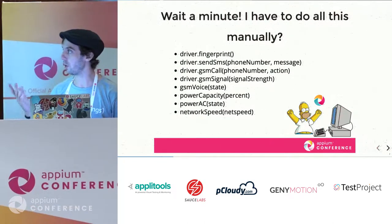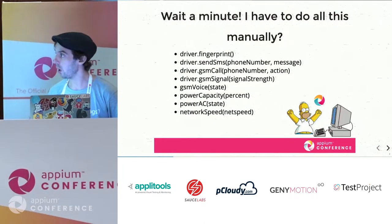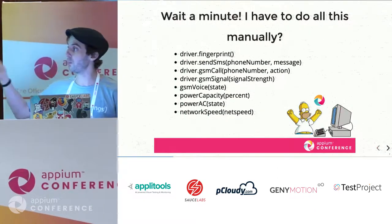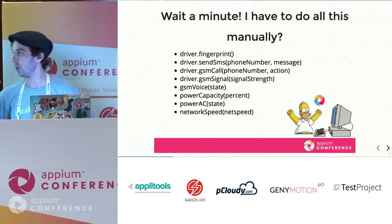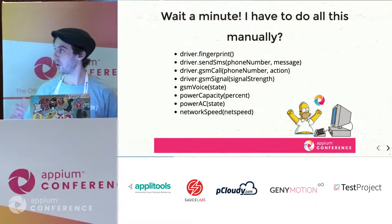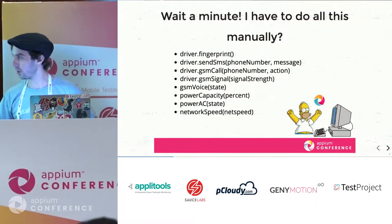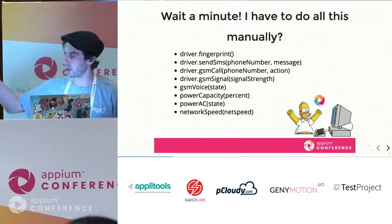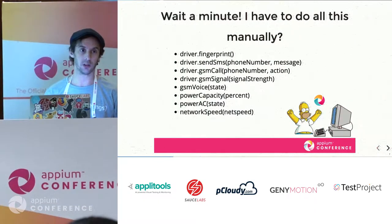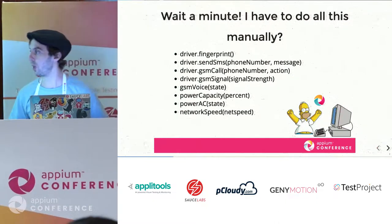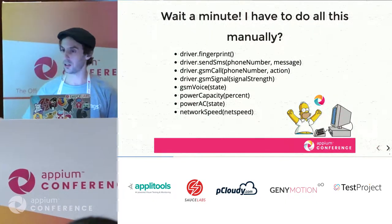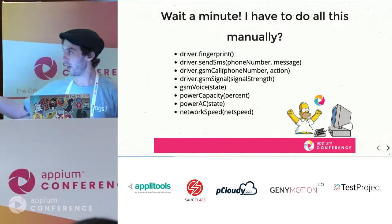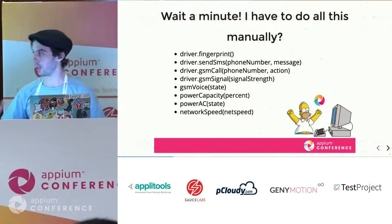These are all the methods that Appium is already supporting for Android: fingerprint, SMS, phone calls, signal strength changes, voice changes, capacity, power capacity — telling you the battery percentage at 100%, 50%, or 2%. AC state tells you if your device is connected or not, network speed, and a few more that couldn't fit on the slide.